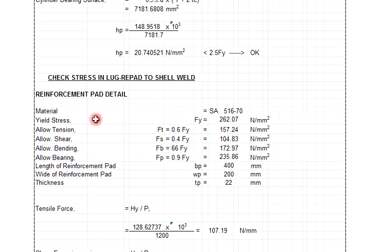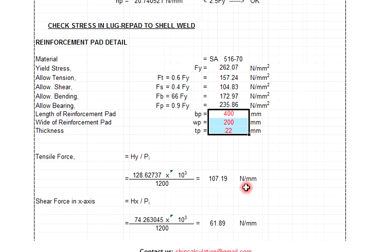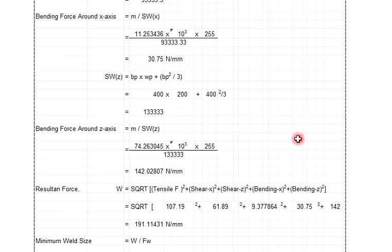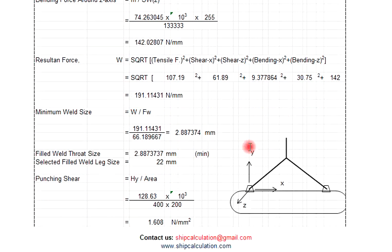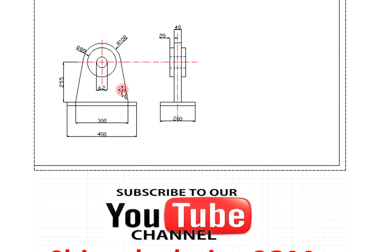Now check stress in the lug to shell weld—the reinforcement pad detail. This one is reinforcement on the pad detail, like a doubler, attached to the shell or main deck. You can change based on your doubler size. You need to double check the shear force and bending force. The minimum weld size here is 2.88, but we're using fillet weld of 22. The punching shear you also have to double check—the punching shear is only 1.608, which is not more than the allowable stress.